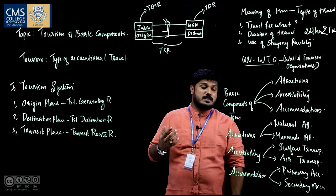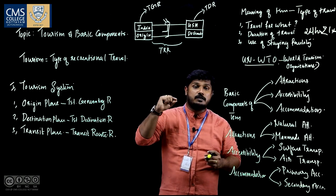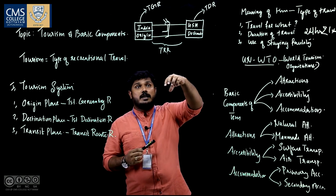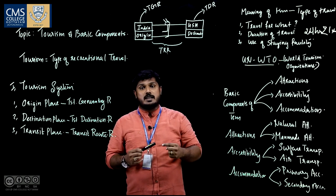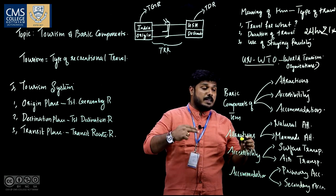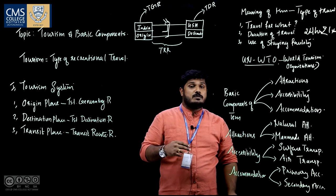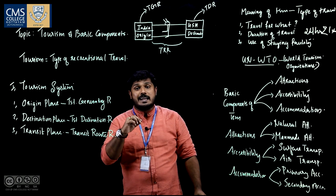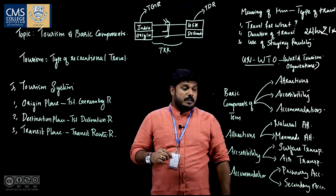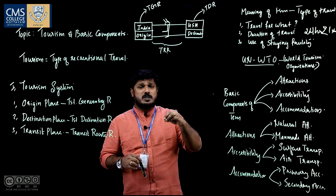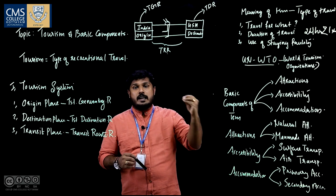Accessibility simply means transportation. Accessibility is the combination of transport infrastructure and transport technology. In tourism, accessibility is divided into two: surface transportation and air transportation. Surface transportation means a transportation process conducted on any kind of surface — that is road, rail, and water. Air transportation is another important mode, conducted through the air using various medium like aeroplanes, aircraft, helicopters, etc.